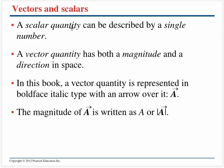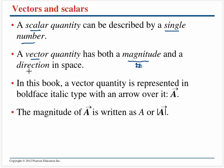Now let's move on into vectors and scalars. We're going to be talking about a lot of physical quantities in this class. Some are going to be what we call scalars, and some are going to be what we call vectors. The big difference between them is a scalar quantity is simply a single number, while a vector quantity has both a magnitude — a number — as well as a direction associated with it.